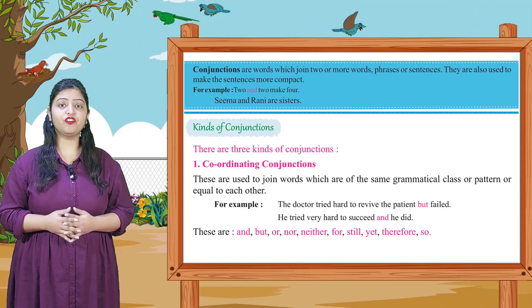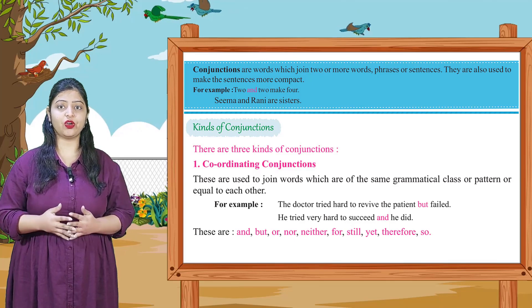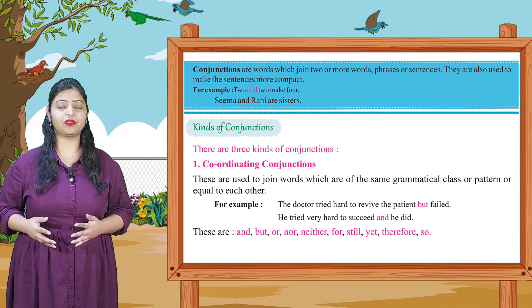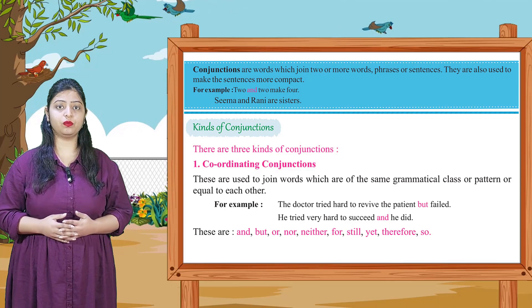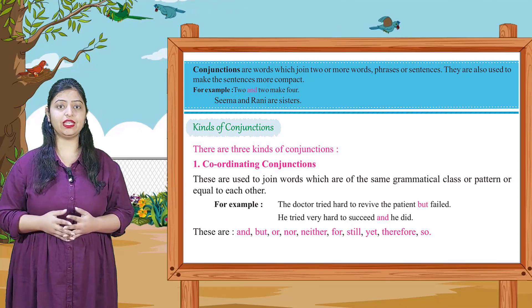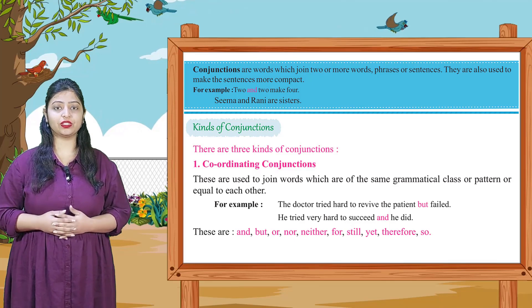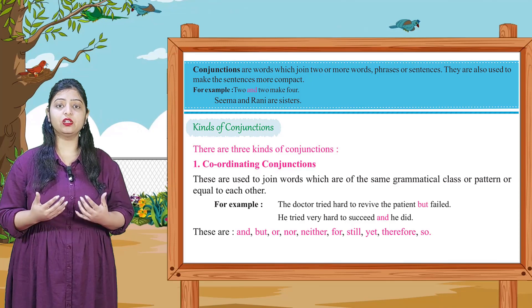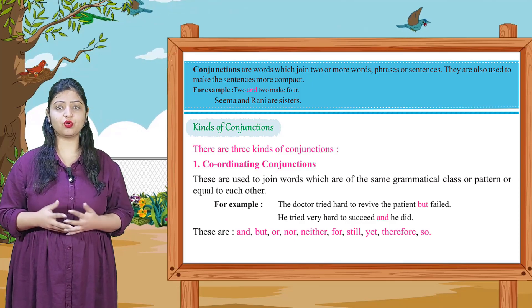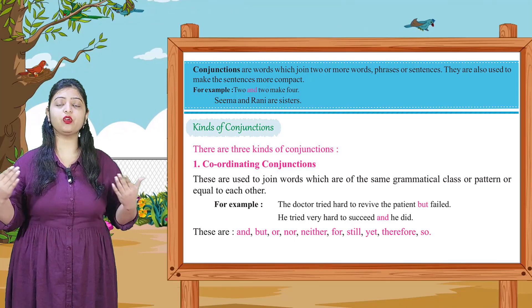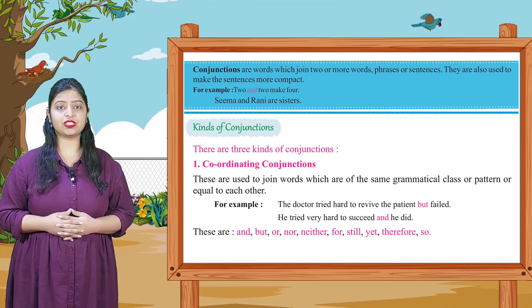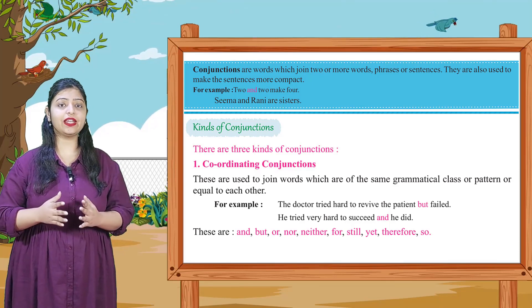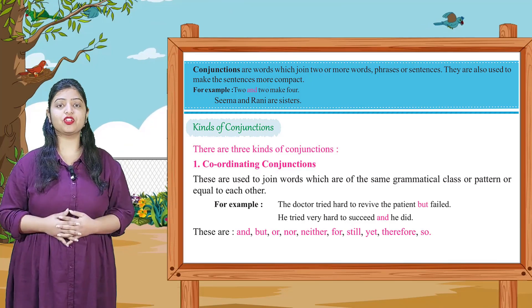Conjunctions are words which join two or more words, phrases or sentences. They are also used to make the sentences more compact. For example, two and two make four. Seema and Rani are sisters. So students, conjunctions are basically joining words, which we join in a group of words, phrases, clauses, sentences, so that we can make compact. So and so are sisters, this is the same kind of conjunctions.